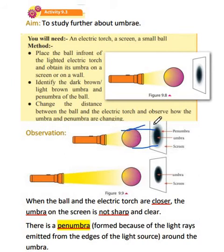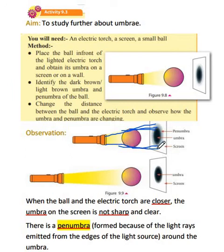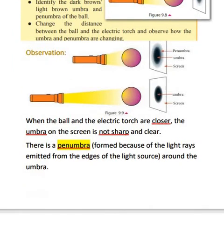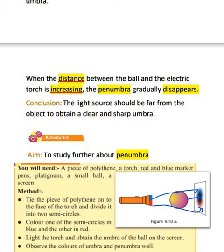You can also see another part that is slightly dark — that is called the penumbra. It is formed because of the light rays emitted from the edges of the light source. Due to these light rays emitted from the edges, a penumbra is formed. But when you move the torch further away, the umbra is sharpened and the penumbra begins to disappear. So the conclusion is: the light source should be far from the object to obtain a clear and sharp umbra.